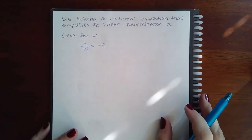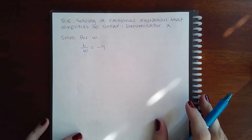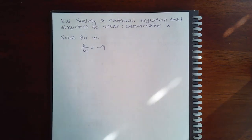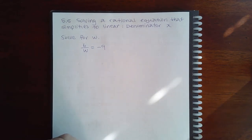Here we have 5.5 solving a rational equation that simplifies to a linear with a denominator x. So the way we solve equations that have fractions is to multiply both sides of the equation,